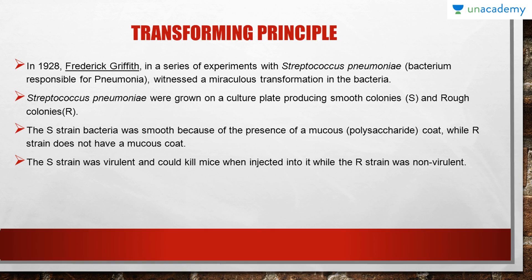In 1928, in his experiment, he took Streptococcus pneumoniae, which is a bacterium responsible for pneumonia. He grew Streptococcus pneumoniae on a culture plate producing smooth colonies and rough colonies. The smooth colonies had bacteria which had a mucus polysaccharide coat on their surface, while the rough ones were devoid of the mucus coat.